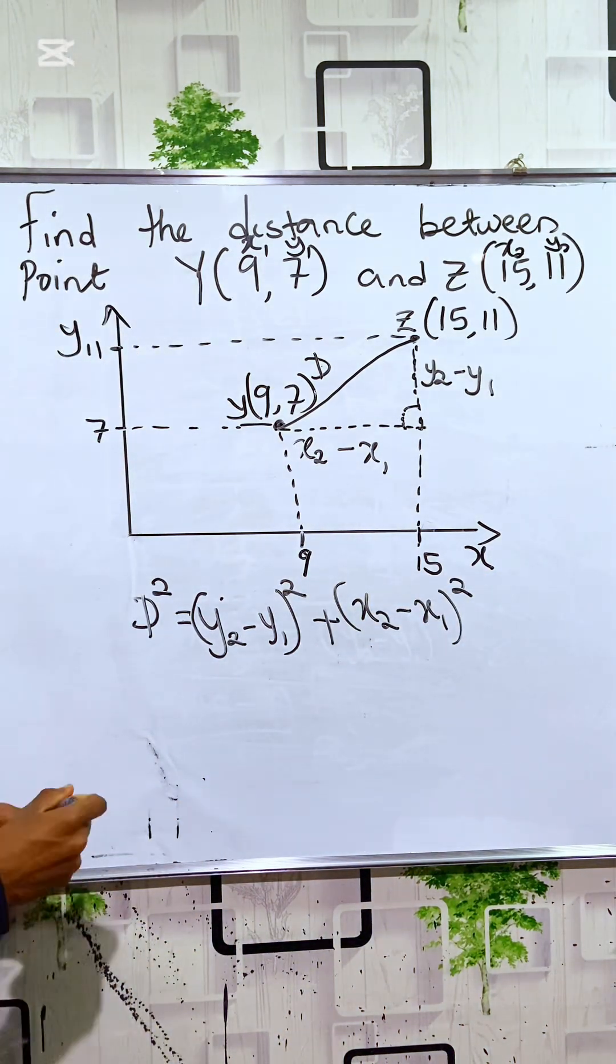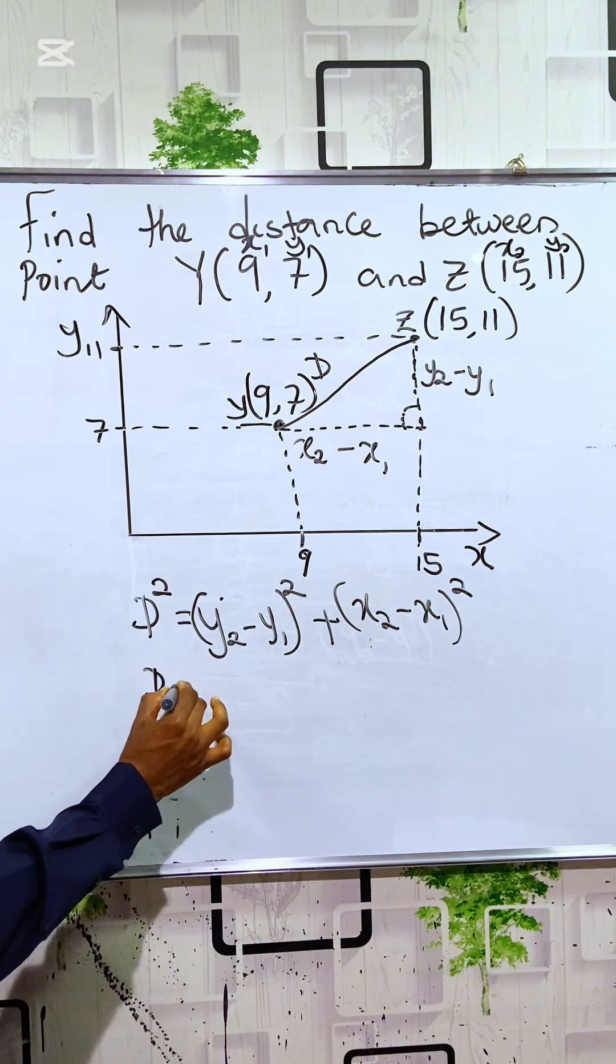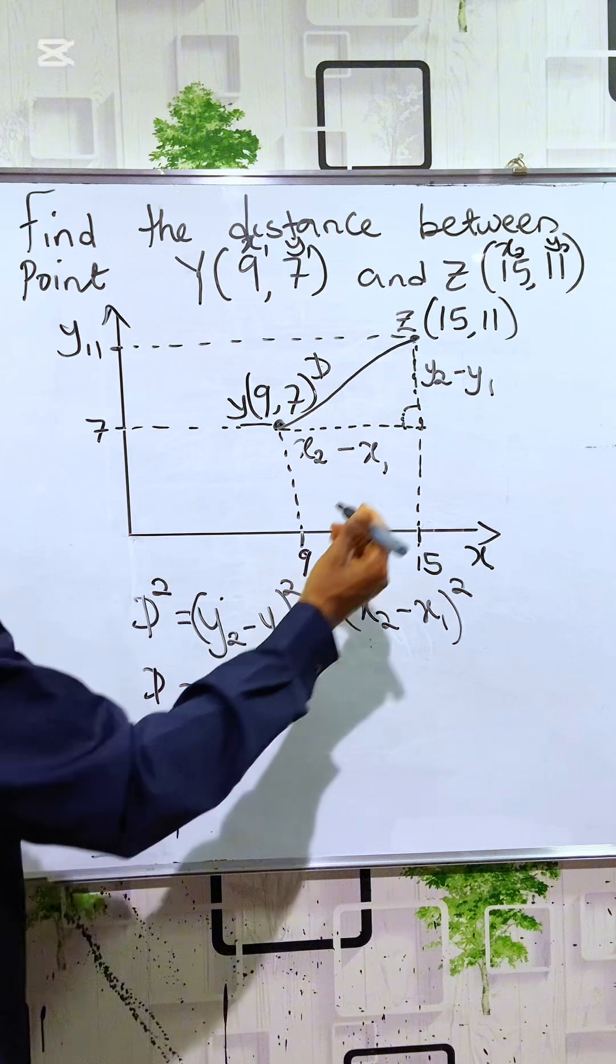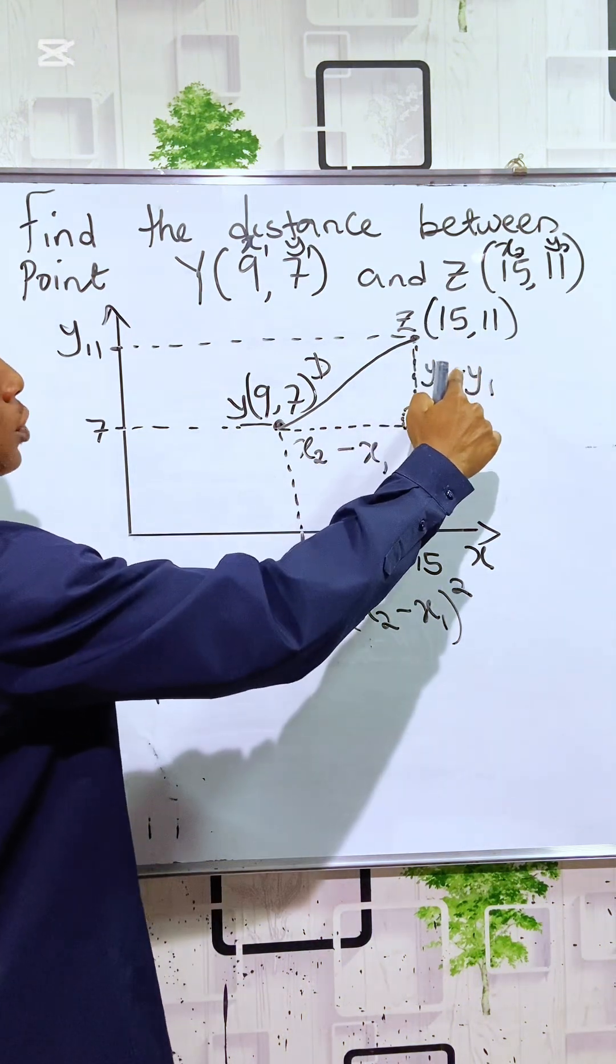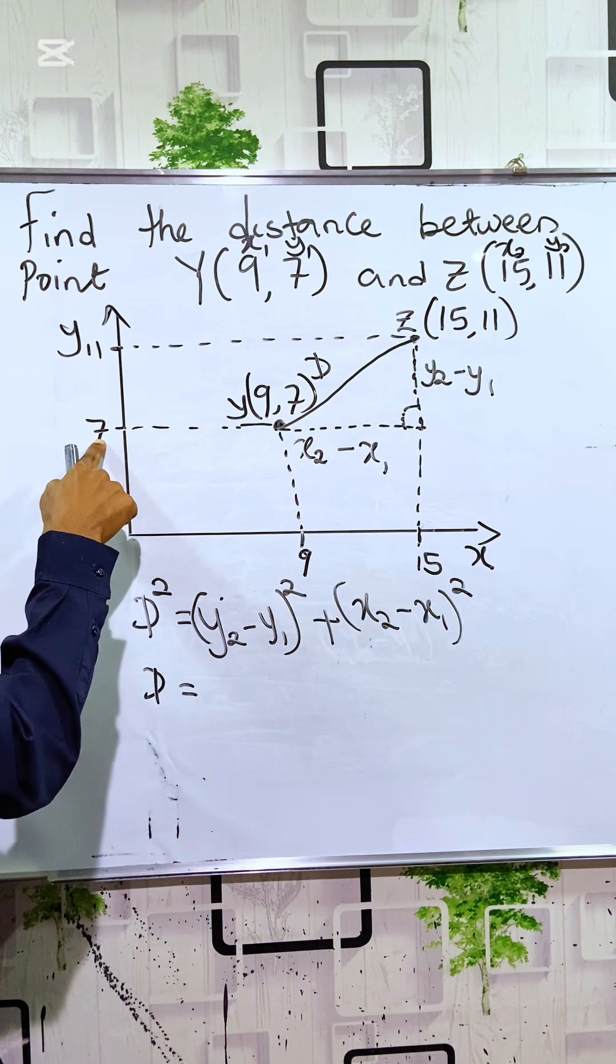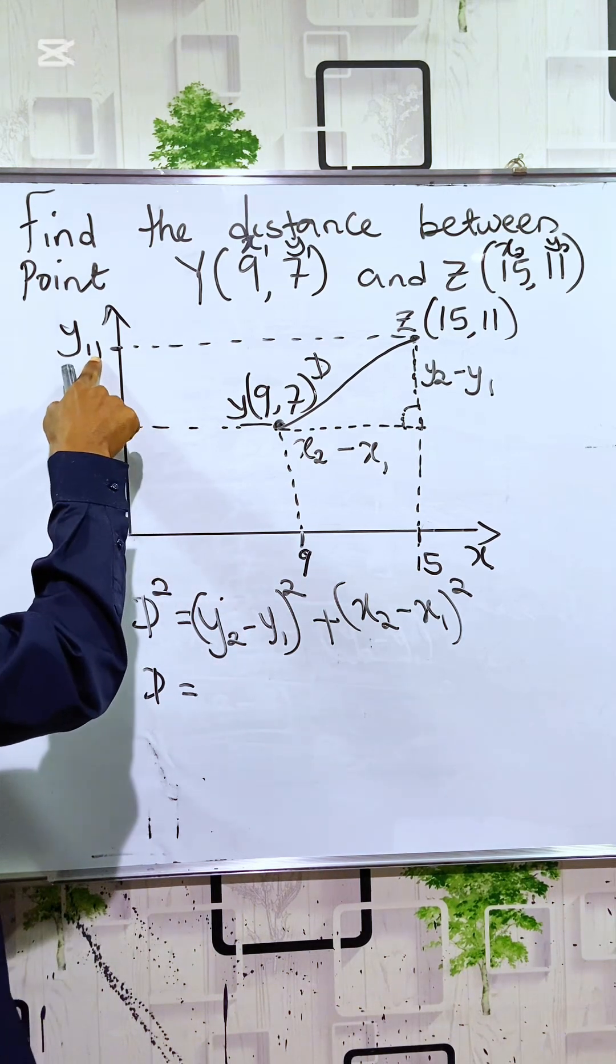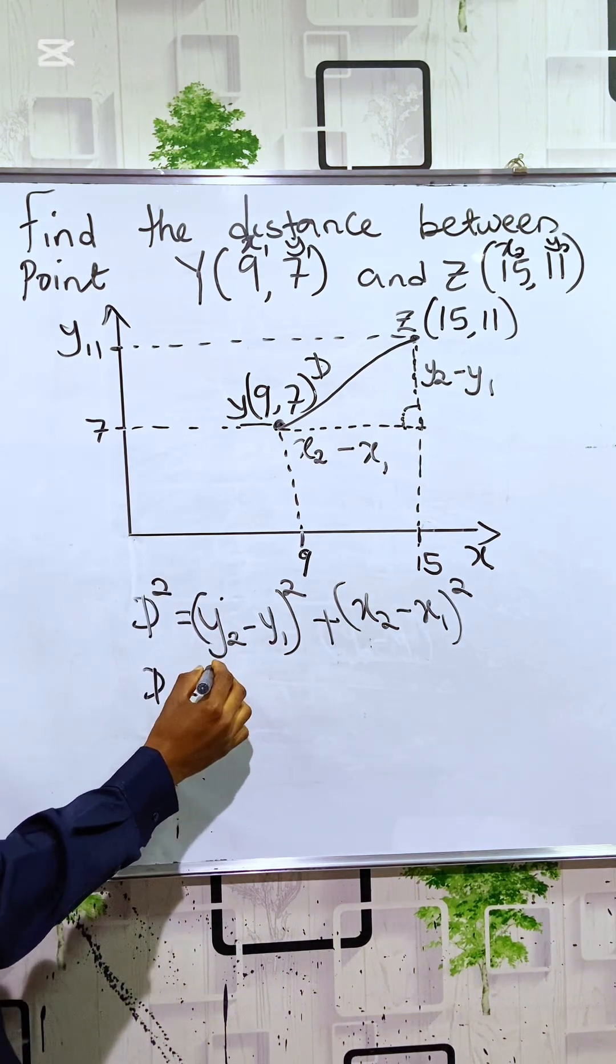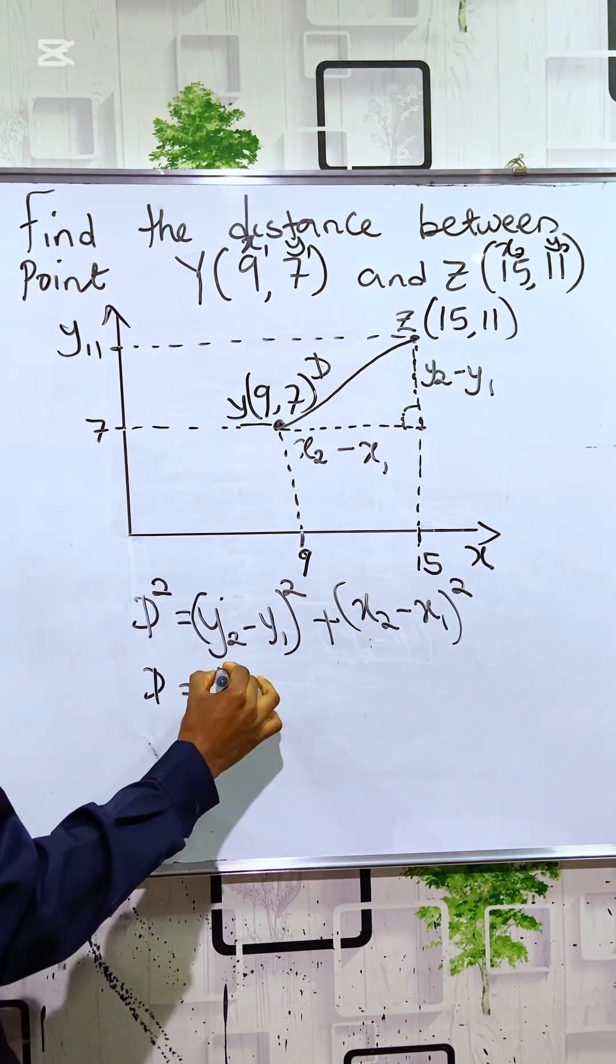So on getting this, you can now see that D is equal to, what is Y2 minus Y1? Y2 is 11 minus Y1 is 7. Okay? So 11 minus 7 is basically 4. We have it as 4 squared plus,